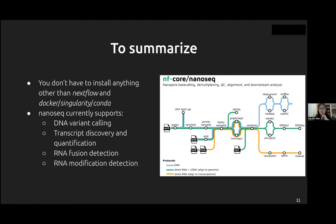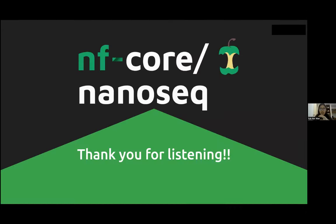To summarize — the NanoSeq pipeline includes many tools, but you don't have to install anything other than Nextflow and Docker, Singularity, or Conda, depending on whether you're using AWS cloud or an HPC. With the latest release of NanoSeq, it supports DNA variant calling, transcript discovery and quantification, RNA fusion detection, and RNA modification detection. Thanks for listening — I'm happy to take any questions.